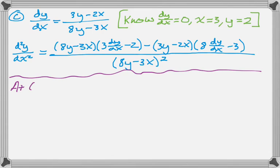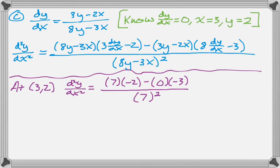So let's substitute all that in. So at the point 3, 2, the second derivative is going to work out to 7, because 8 times 2 minus 9, so 16 minus 9 is 7, dy dx is 0, so that's just times negative 2. And then minus, 3y minus 2x is actually 0, so it doesn't really matter what we get on this second part, but it is negative 3. And then divided by 7 squared, and that gives us negative 2/7.